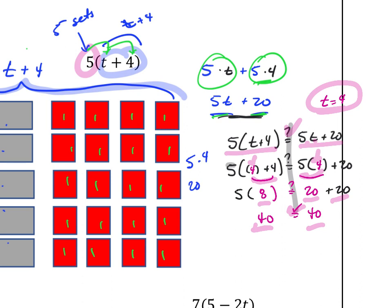When we evaluated both sides with t equals 4 we got 40. If you used two you'd have gotten 30 on both sides; if you used one, 25 on both sides. This is how you do the check. If you want to know if you're getting the right answer, always do the check — that's how you play it safe.